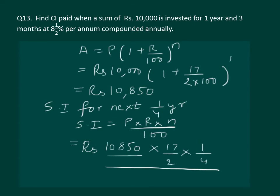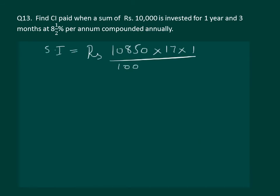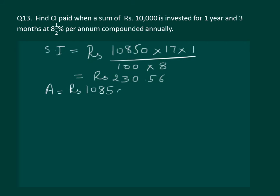On solving the simple interest formula — rupees 10,850 multiplied by 17 by 2 multiplied by 1 by 4, all divided by 100 — the simple interest comes out to be rupees 230.56 paisa. So now we have two figures: the amount after the first year is rupees 10,850, and the simple interest for the next three months is rupees 230.56 paisa.